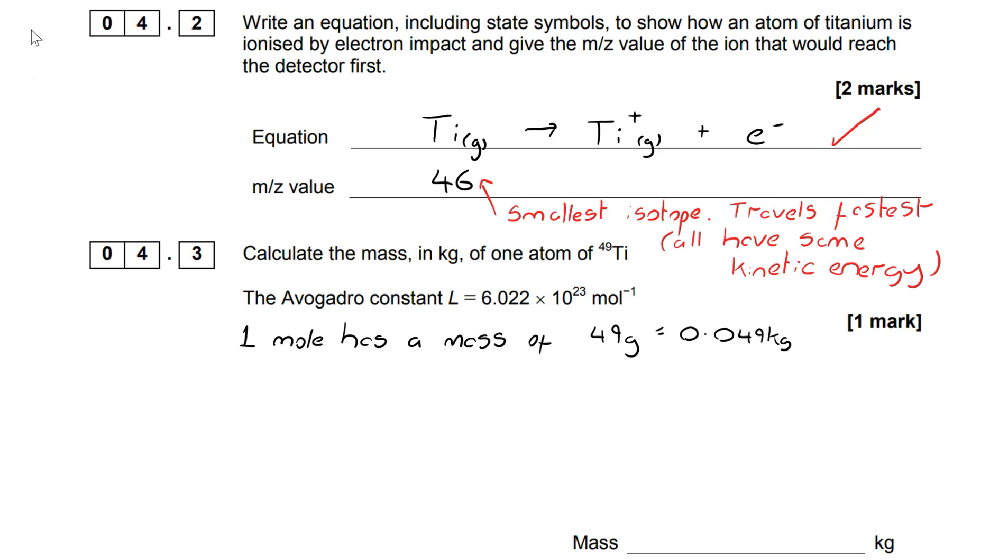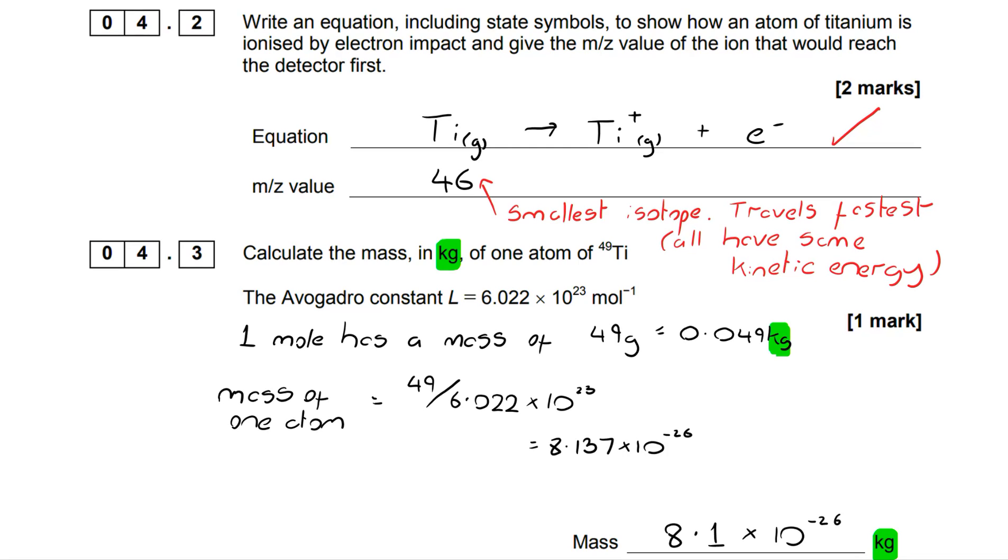Read the question carefully because we want to calculate the mass in kilograms of one atom. So I'm first going to convert my 49 grams into kilograms, and once I've done that I can divide that by Avogadro's number. That's going to take me to my answer.